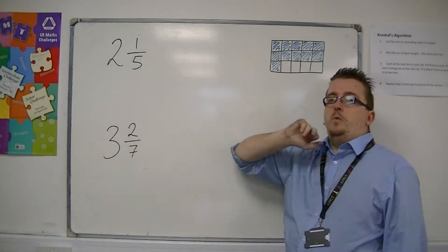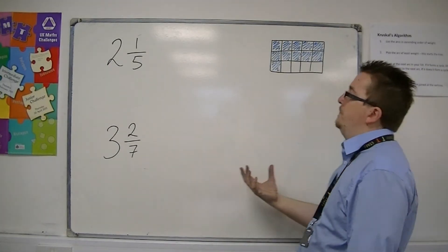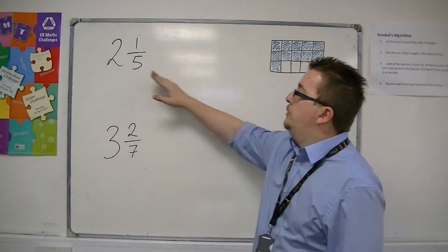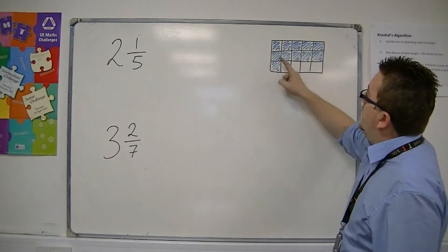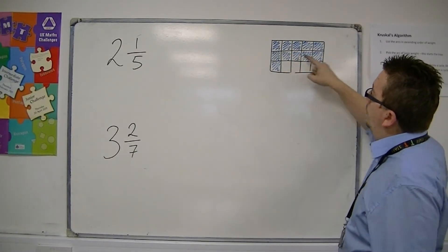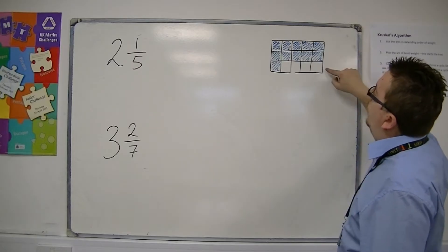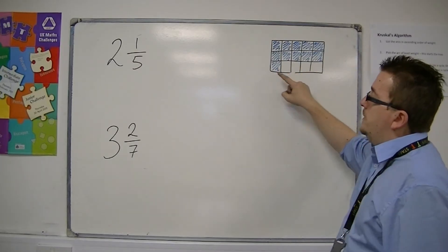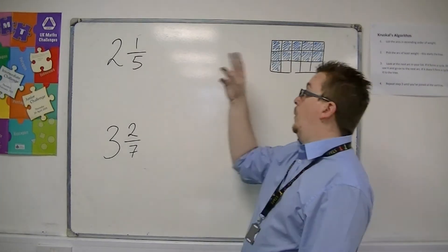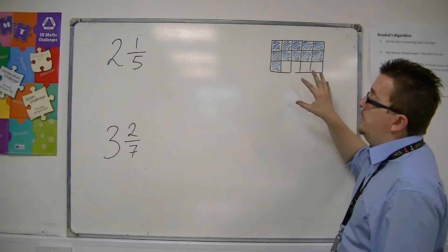The first one is 2 and 1/5. Now, 2 and 1/5 could be represented like this. So we've got two full bars and 1 out of 5 shaded in the third bar. So 2 and 1/5, and that's how it could be represented.